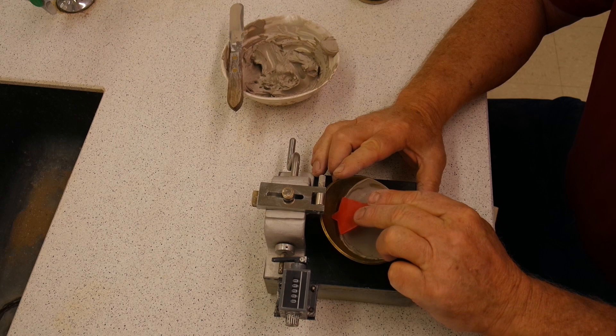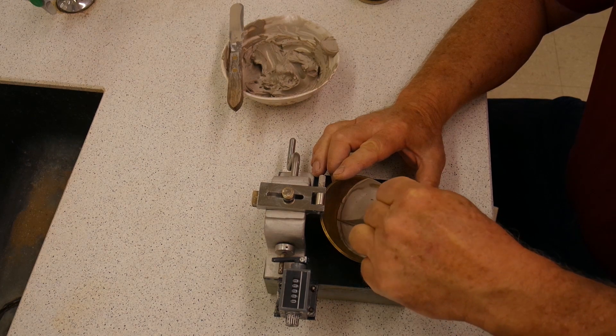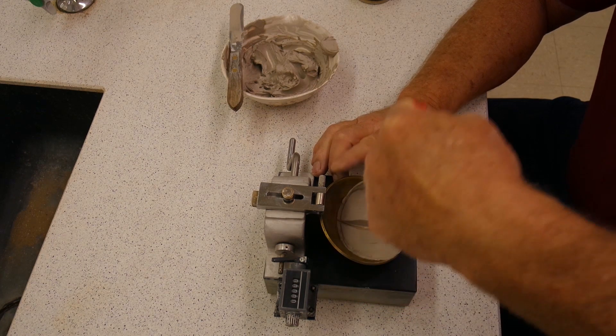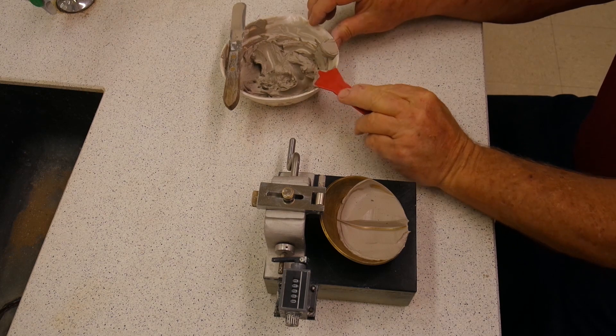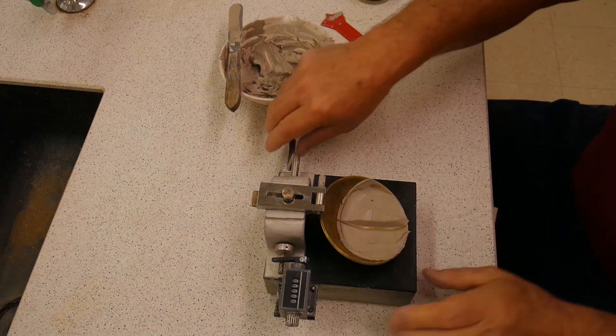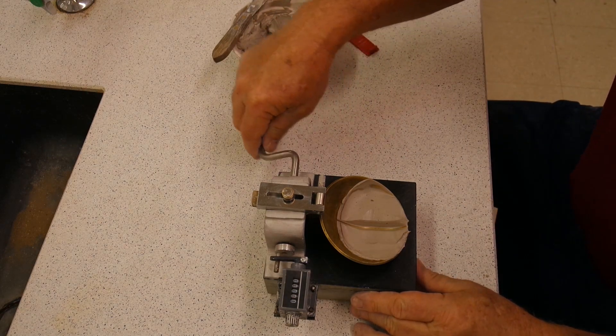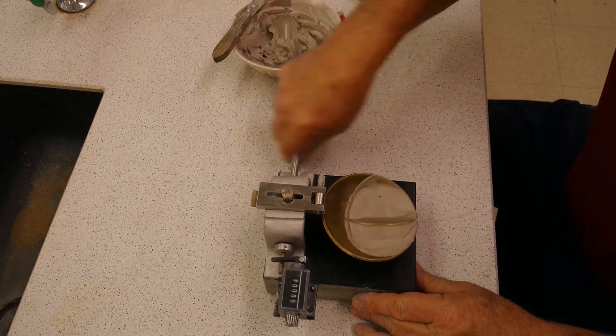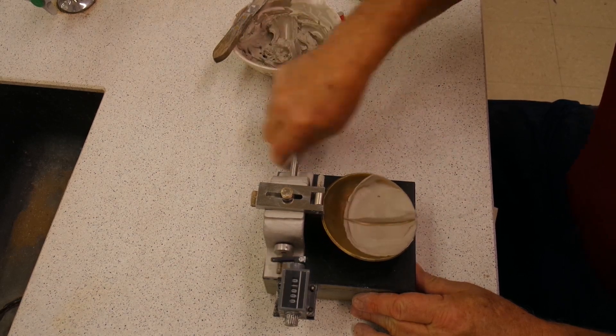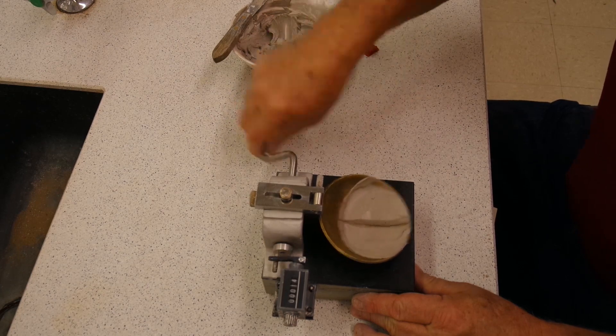We will then put the groove in the sample. If it is stiff, it may take several passes where you can do it in one pass if the material is soft. At this point, we are ready to drop the cup onto the base and see how many drops it takes for one inch of the material to flow together.